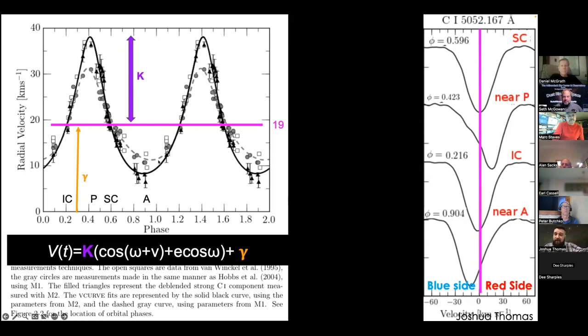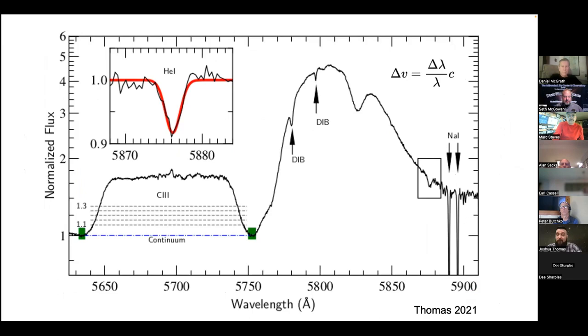You take the information from this line going back and forth and make a complicated plot. This is velocity versus time. The time is in phase, which is fraction of orbit. Zero is here, this is half an orbit, 0.5 back to 1, and you keep going. We run some software, fit this with the model, and get the parameters out.